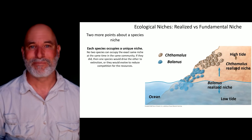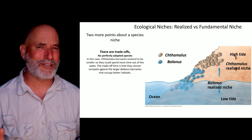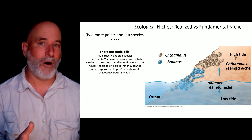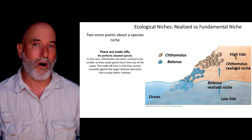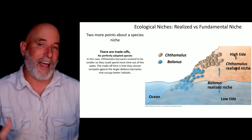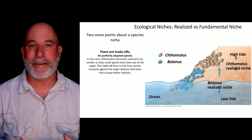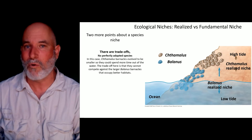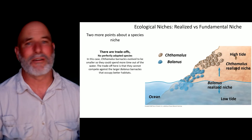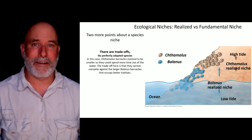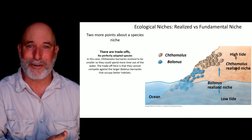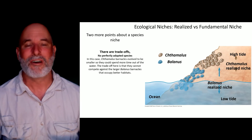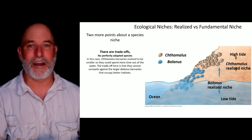Second, there are always trade-offs. The Chthamalus barnacle evolved to resist drying out — it's smaller, doesn't need as much water, and therefore can live higher up on the rock. But it can't grow lower because it's out-competed by the larger Balanus. The larger Balanus can grow bigger and out-compete smaller barnacles, but as a result it's physiologically constrained to living lower on the rocks, where there's more water, less drying, and more foraging time.